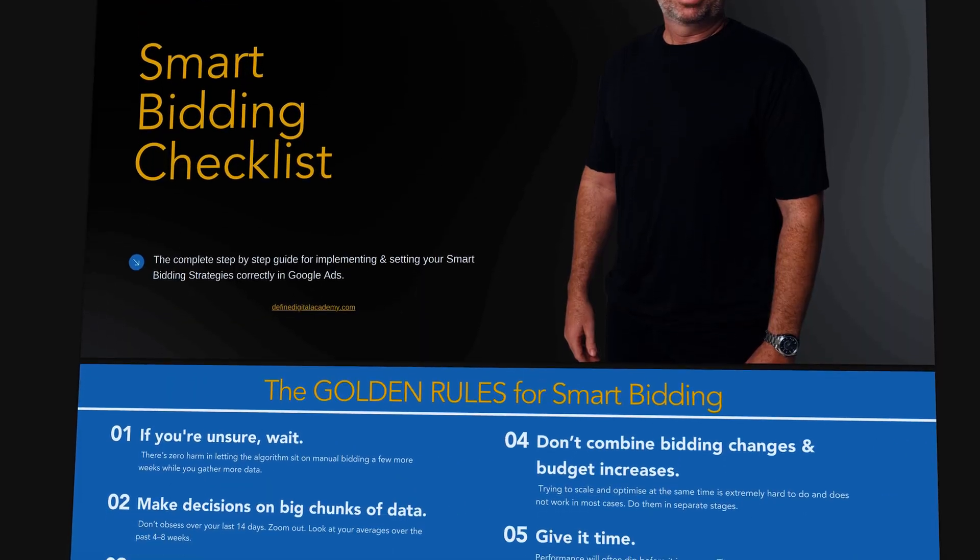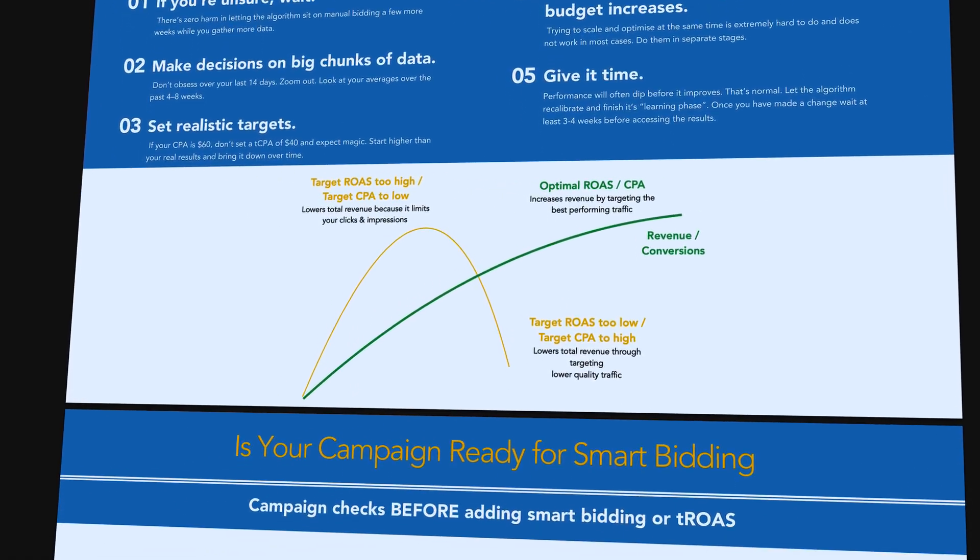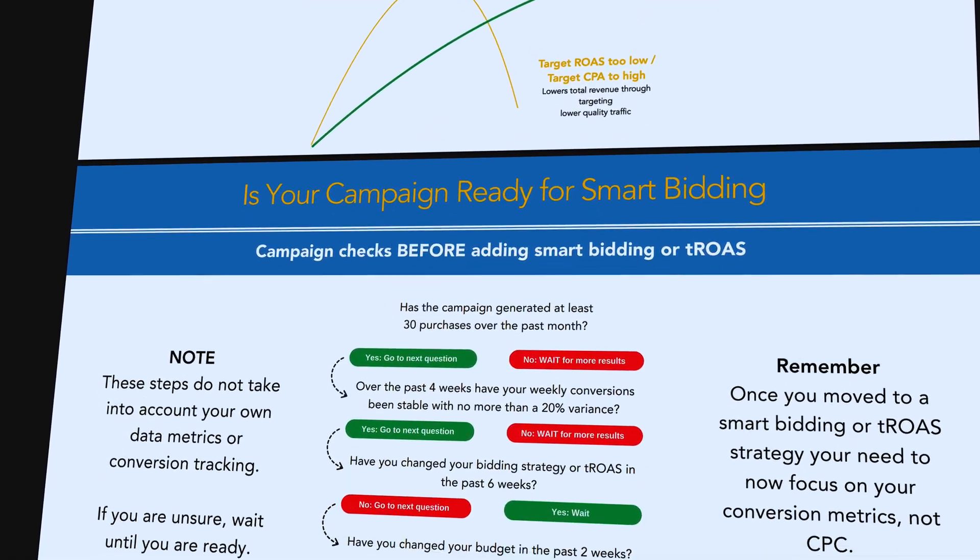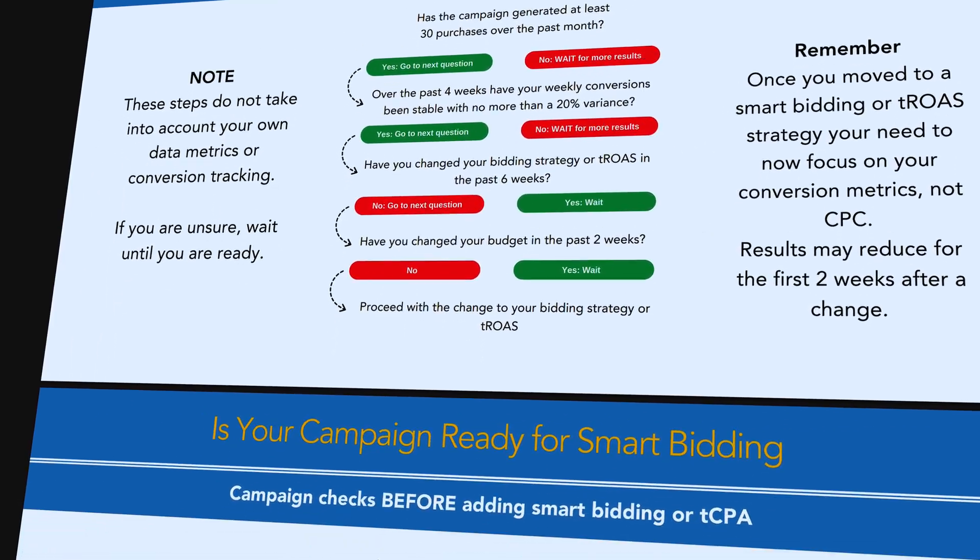Let me jump into a screen share to take you through the rationale behind it and then show you how easy it is to execute. If you don't want to use this prompt, you can follow the link in the description to get a free smart bidding checklist that takes you through the exact step-by-step process and rationale this prompt uses — so you can have confidence about whether your account is ready for smart bidding or whether it's time to change your targets.